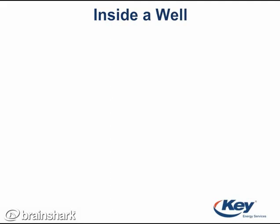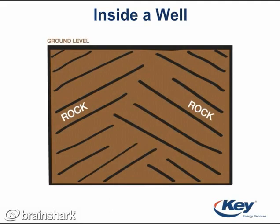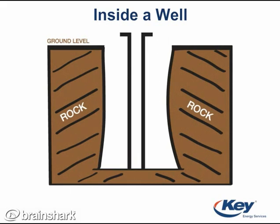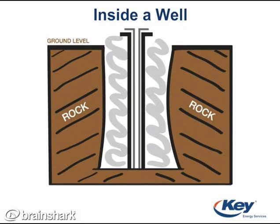Let's start by describing the process of drilling a well. First, a drilling rig is used to drill the well. Next, casing is put in place for support and is then surrounded with cement for additional support and to protect the water zone. Lastly, a workover rig is used to place tubing or piping in the well bore.